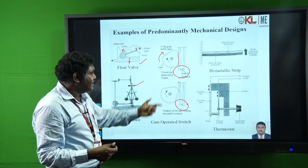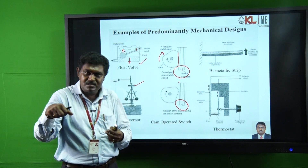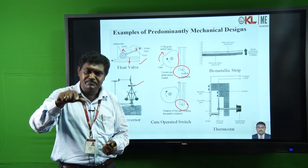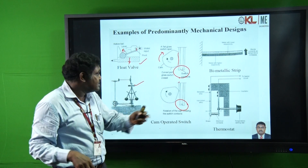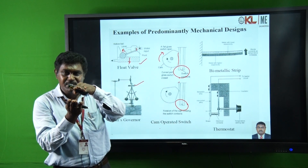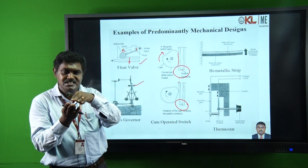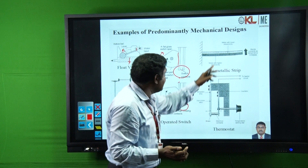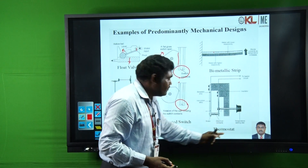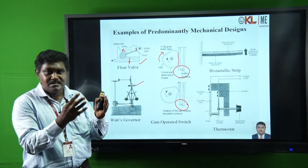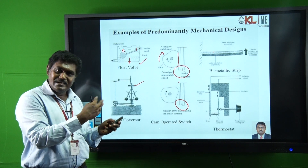The bimetallic strip — we are using this in iron boxes. We set a certain temperature, and once it reaches that temperature, the iron box is automatically switched off. How? By using bimetallic strips — according to temperature, once the temperature increases, these strips expand. Once they expand, these two are connected and disconnected according to the expansion. This is how the thermostat works. These are a few examples of mechanical designs used for the purpose of controlling to obtain the desired output.